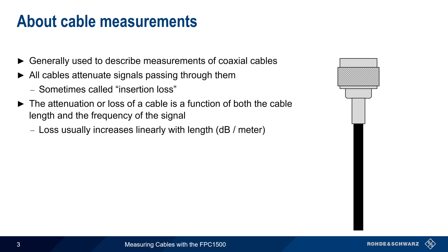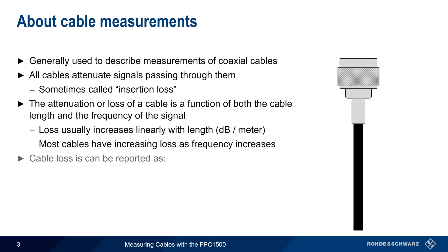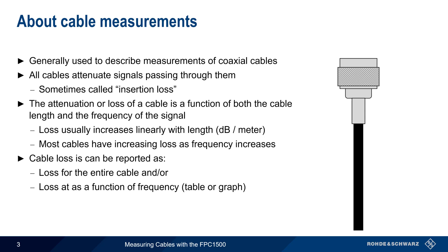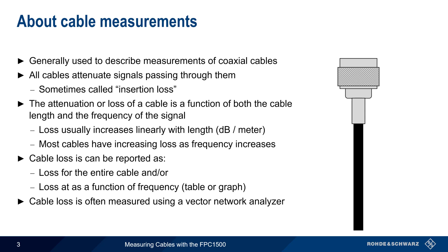Loss can therefore be expressed in units of dB per meter or foot. But more importantly, most cables also have increasing loss as the frequency increases. Cable loss can therefore be reported as a single value in dB for the entire measured cable, and it can also be given as the amount of attenuation or loss as a function of frequency, in either tabular or graphical format. Although there are many ways of measuring cables, the most common and the most accurate is using an instrument called a Vector Network Analyzer, or VNA.